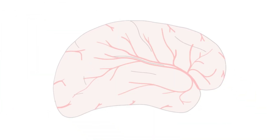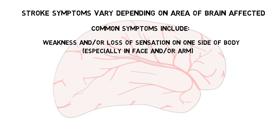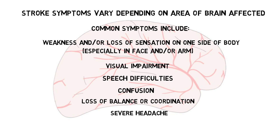The symptoms of a stroke vary depending on the artery affected and the area of the brain it supplies. Some common symptoms include weakness and loss of sensation on the side of the body opposite where the stroke is occurring, especially in the face and the arm, visual impairment, speech difficulties, confusion, loss of balance or coordination, and severe headache.